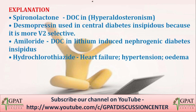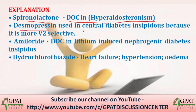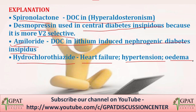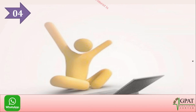Brief explanation: Spironolactone is the drug of choice in hyperaldosteronism. Desmopressin is used in central diabetes insipidus because it is more V2-selective. Amiloride is the drug of choice in lithium-induced nephrogenic diabetes insipidus. Hydrochlorothiazide is used in heart failure, hypertension, or edema.